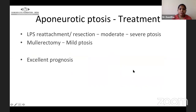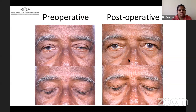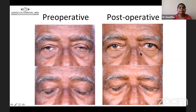The treatment of aponeurotic ptosis depends on severity: if moderate to severe, LPS reattachment or resection can be performed; if mild, mullerectomy can be done. They generally have excellent prognosis. Here is a patient with bilateral ptosis where I performed bilateral levator resection surgery. This patient previously needed help from family members to walk due to visual obstruction, but after ptosis surgery his visual access became clear and he can walk around without any support.